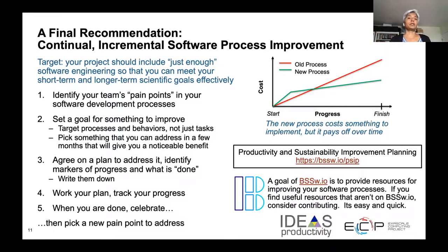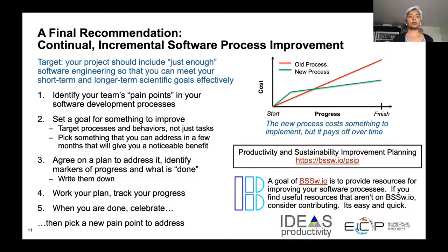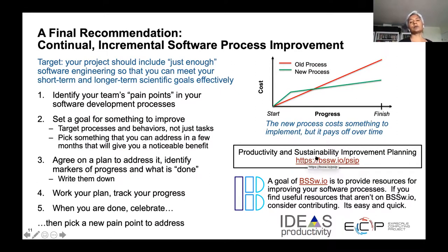The way to go about this is: identify the pain points of your software development process, set a goal for something you want to improve, agree on a plan to address it, identify markers of progress, work your plan, track your progress, and when you're done, celebrate and then pick up a new pain point to address. This is what the IDEAS project is promoting — Productivity and Sustainability Improvement Planning — and it's one way to get started with improving your software process.